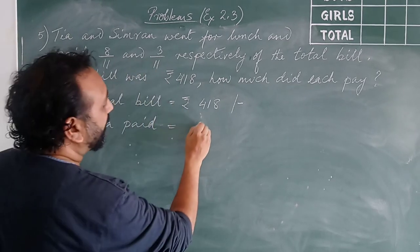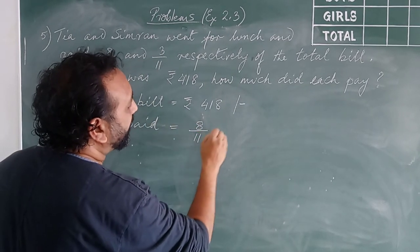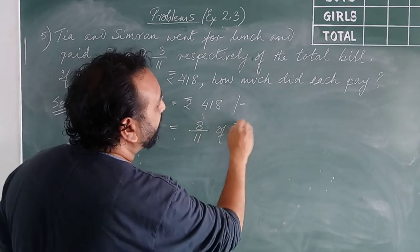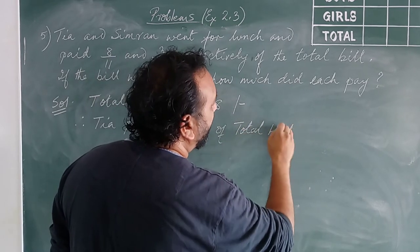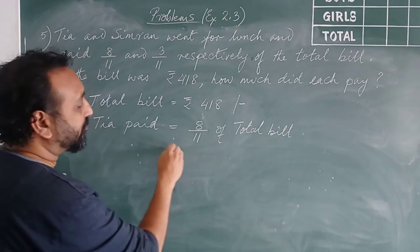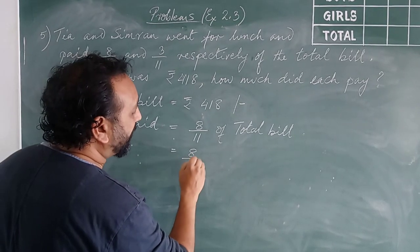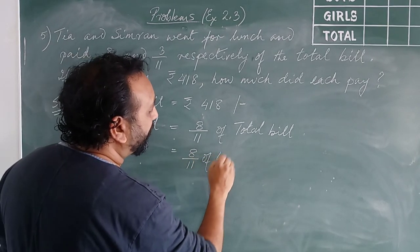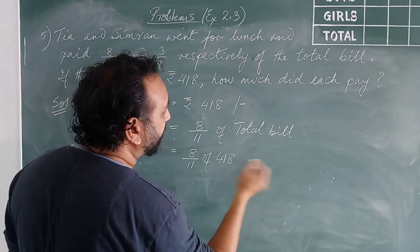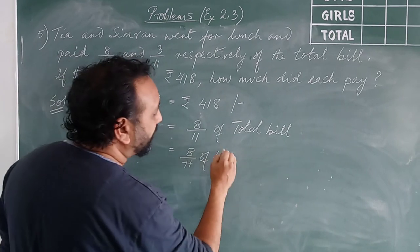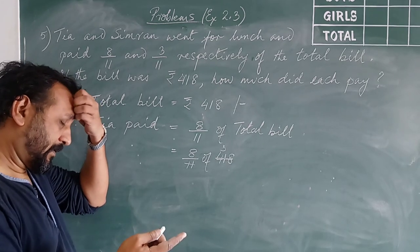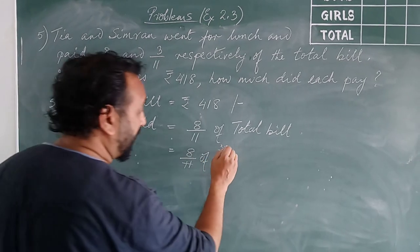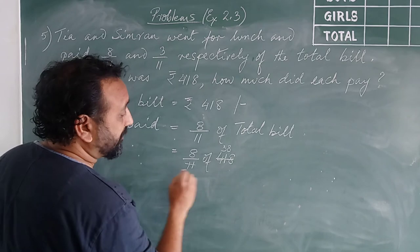8 upon 11 of total bill. Total bill is this, so how much does Tia pay? 8 upon 11 of 418. 11, 3s are 33, 7, 8, 18, which is equal to...